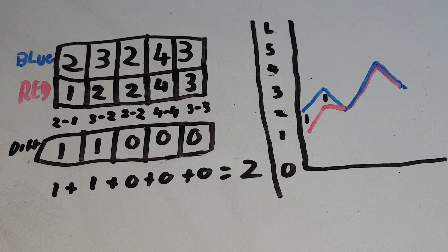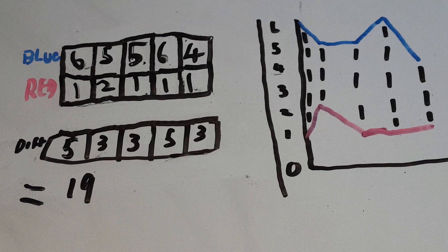If on the other hand the two patterns are different there will be a larger distance between them. Take a look at this example and notice that we compare our two instances the same way but when you look at the graph the patterns are quite different and there is a larger total distance between them.